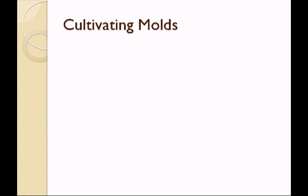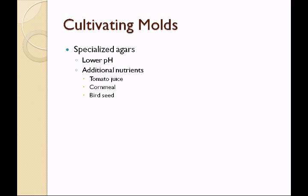In order to identify molds, typically we try to grow them in the laboratory. We have to use specialized agars that have lower pH. Fungi prefer more of an acidic pH — when you think about your house, you see fungi typically growing on spaghetti sauce or on oranges, which have a lower pH. They also need additional nutrients. There's tomato juice agar, cornmeal agar, or bird seed agar that we can use to grow molds. The all-purpose medium for molds is called mycological agar.